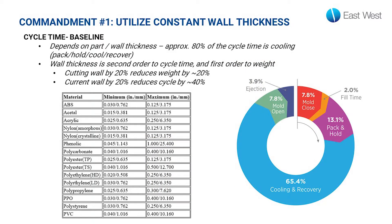Another benefit of having a constant wall is that it will cool in the least amount of time possible. The majority of your cycle time — the time it takes for the part to eject from the mold — is wrapped up in cooling. So the less wall thickness you have and the more consistent your wall thickness is, the less cooling time and the less money you'll spend on that part. Some basic wall thicknesses for given materials are shown in this table as a good starting reference.